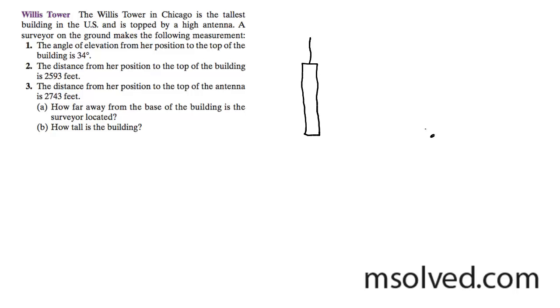So we got a person here standing, they're micro. So to the top of the building here, their angle of elevation is 34 degrees. The distance from her position to the top of the building, so this distance here, 2,593 feet.